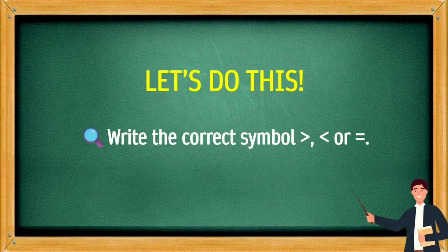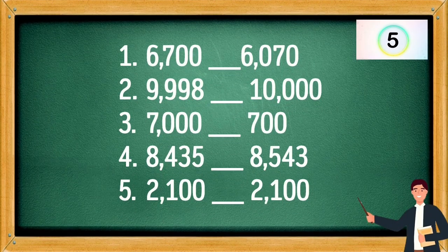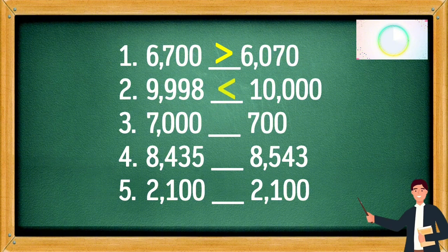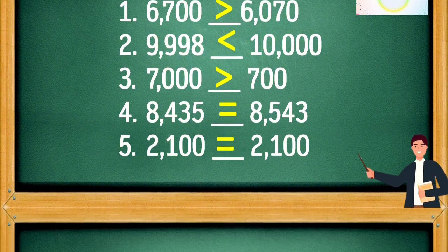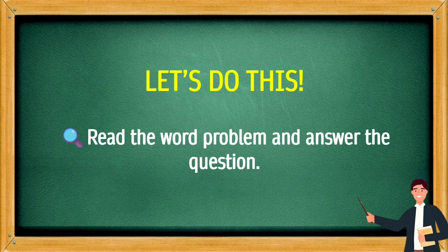Let's do this! Write the correct symbol — greater than, less than, or equals. 6,700 is greater than 6,070. 9,998 is less than 10,000. 7,000 is greater than 700. 8,435 is less than 8,543. 2,100 equals 2,100.